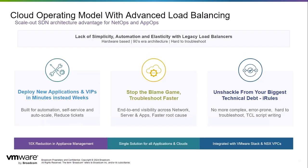Next we will go over the cloud operating model. With Avi load balancing, you can deploy new applications in VIPs in minutes instead of weeks. It is built for automation, self-service, and auto-scale, and leads to reduced tickets. It provides faster troubleshooting with end-to-end visibility across the network, server, and applications, and allows faster root cause analysis.